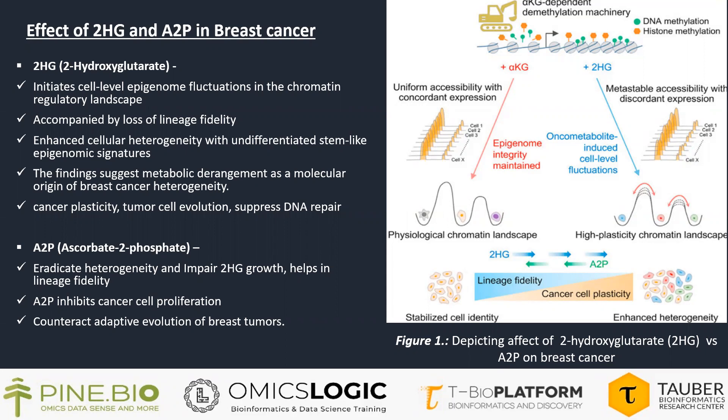A2P, ascorbic 2-phosphate, which is a form of vitamin C, eradicates heterogeneity and impairs 2HG growth. It helps in lineage fidelity. A2P inhibits cancer cell proliferation and also counteracts adaptive evolution of breast cancer.